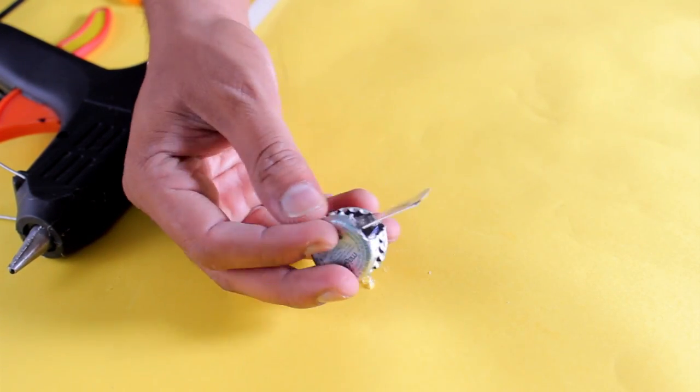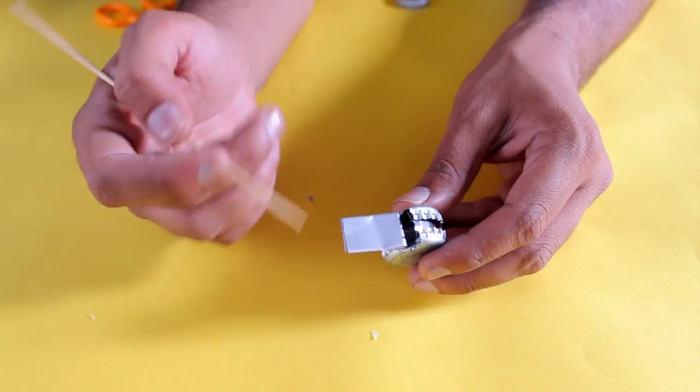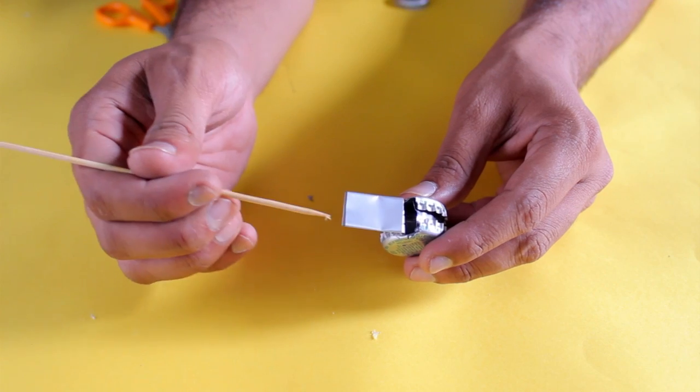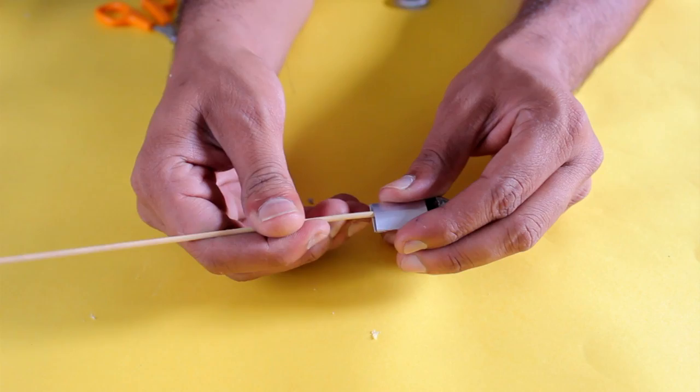Now our whistle is ready. The whistle should look like this. Now with the help of a wooden skewer or any other pointed object, make some space for blowing air towards the blowing end like this.